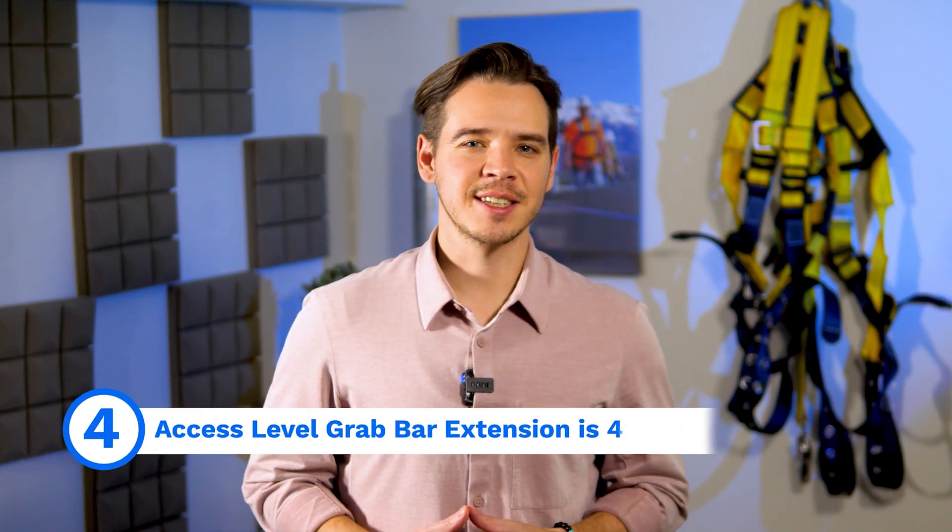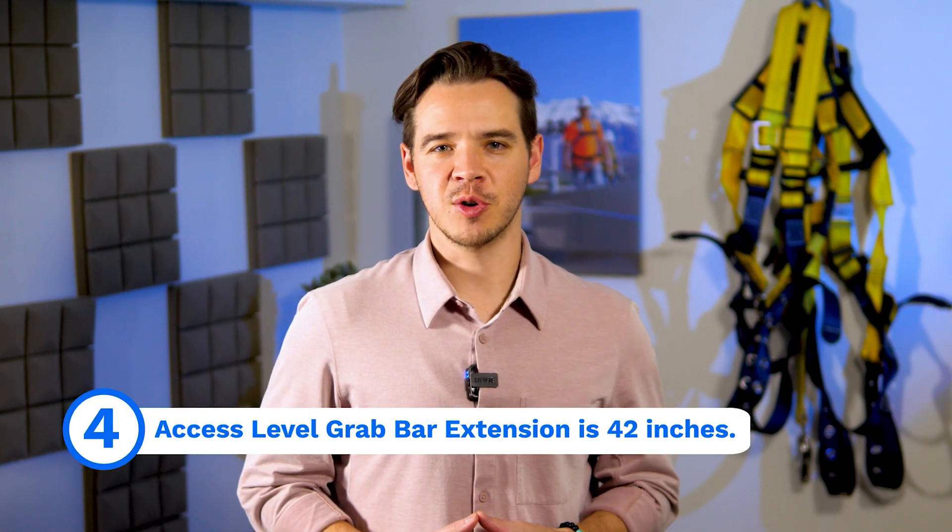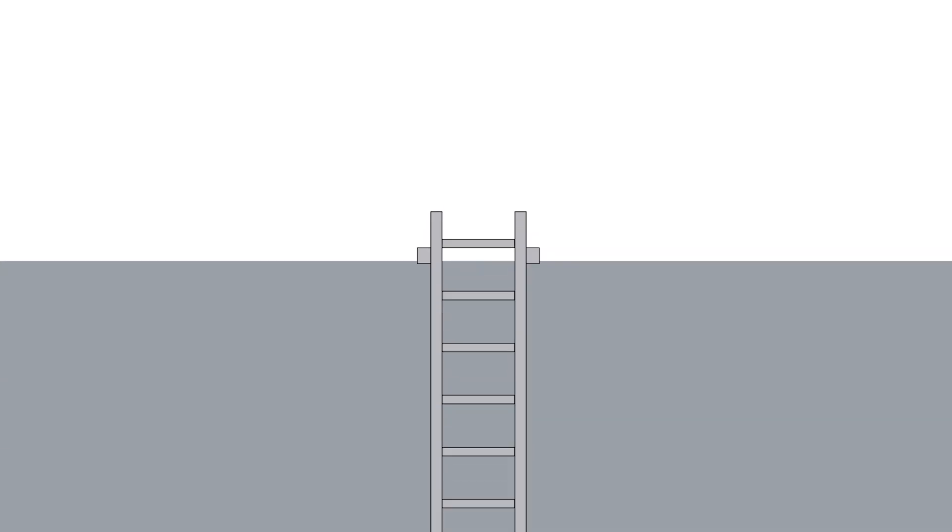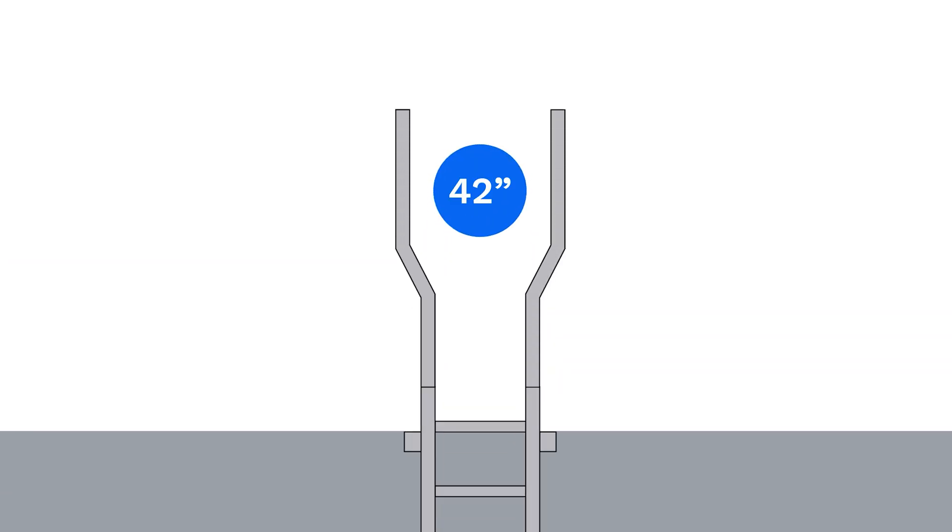Number four, access level grab bar extension is 42 inches. To protect the worker exiting a ladder, OSHA requires a 42 inch high grab bar extension above the access level or landing platform at the top of the ladder.